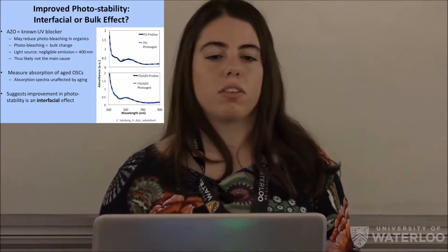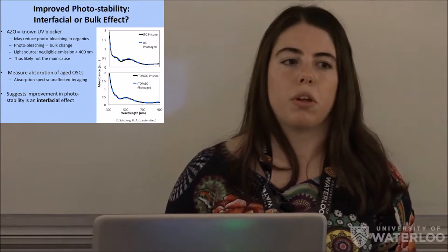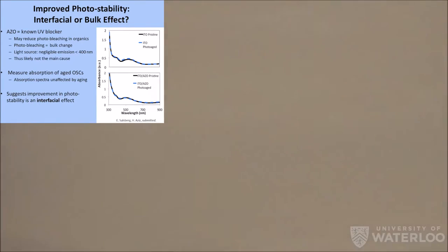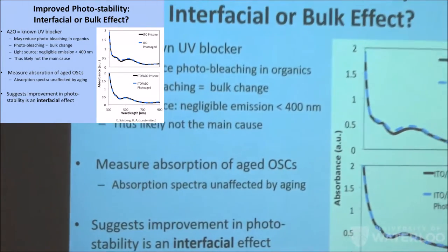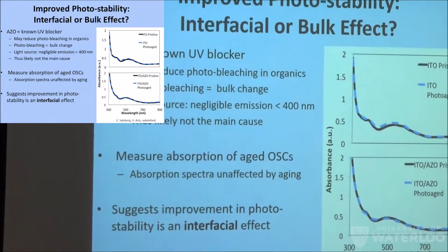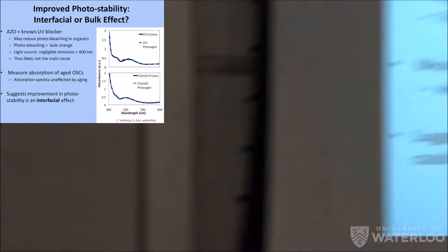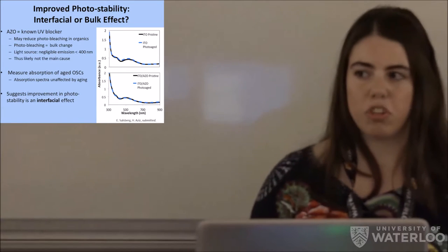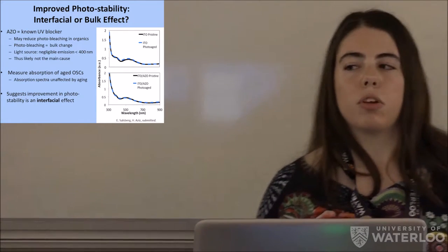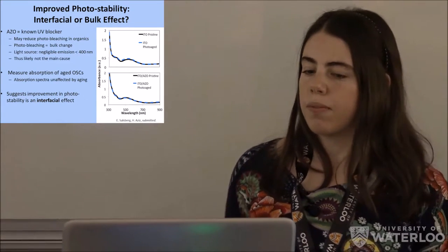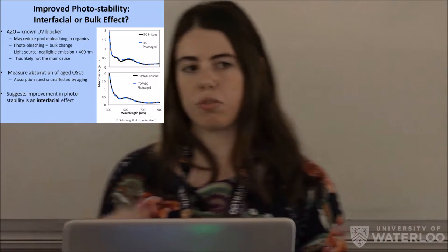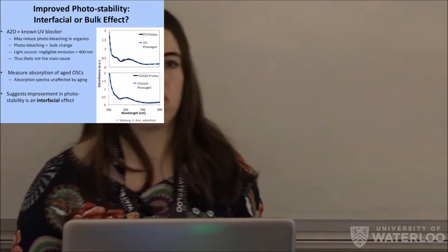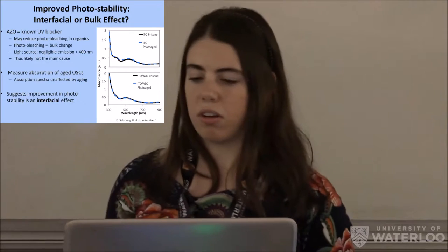So we postulate, why do we see this effect? Is it an interfacial or bulk related effect? So one possible hypothesis is that azo is a known UV blocker. So it blocks ultraviolet. Ultraviolet isn't getting into the organic materials, therefore, they're not degrading. So this is valid, except for that our light source doesn't really have very much emission below 400 nanometers. So we don't think this is the case here because we don't have very much UV component. So just to verify that, we measure the absorption spectra of the organic solar cells. And we find that with and without aging, so pristine is like fresh without aging, that these spectra are basically the same. So that suggests that there is no bulk change to the materials and that what we're seeing is in fact an interfacial effect.